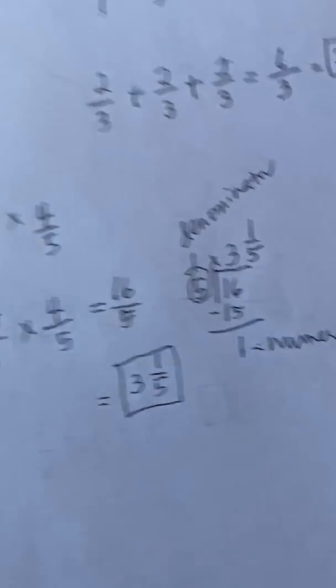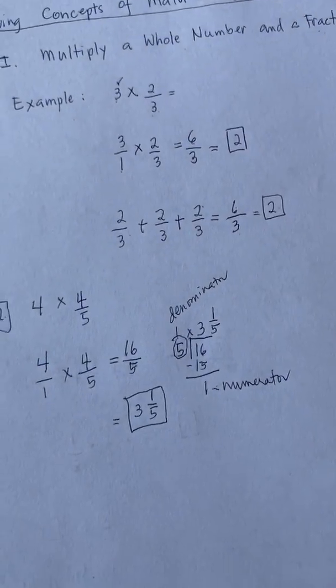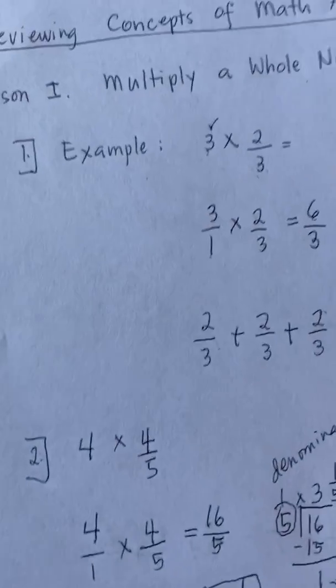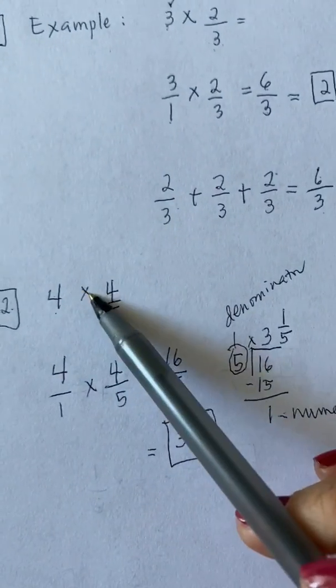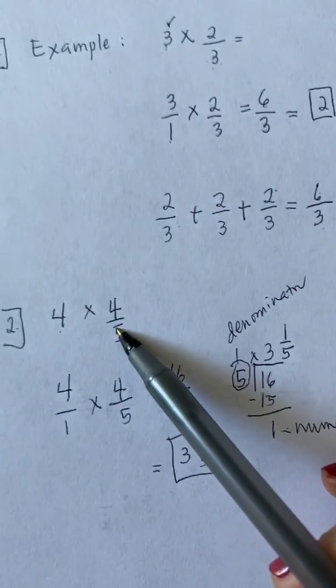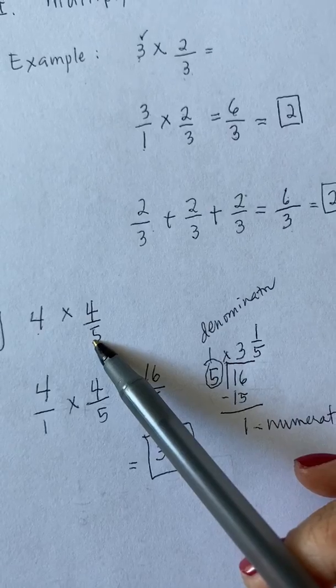Now, let's go to our addition equation like what I did in the first example. So our original numbers are 4 times 4 fifths. So how many times are we going to add 4 fifths?